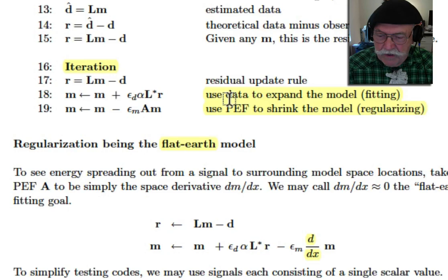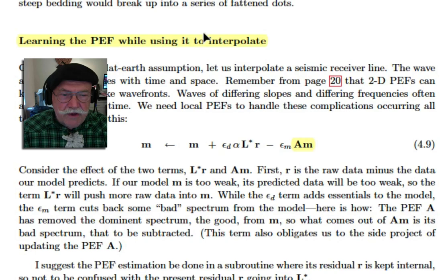With the updated model, we can now start looking for a PEF. And now we apply the PEF, and that updates the model again. So there's two stages of model update here. One of them uses data to expand the model. This is called data fitting. And the other one, the next line, uses the PEF to shrink the model. In other words, regularizing. Supposing we're going to do a flat earth case. Then we know the PEF. The PEF is just an x derivative. Now let's learn the PEF. Well, once we have a model, we can always learn a PEF from the model. So that's easy. Let's talk about flat earth regularization. Well, we just have to take the gradient here and minimize that. And now let's talk about 3D, locally constant dip. There could be several dips, regularization. Well, that simply involves two PEFs, one called A and one called B.